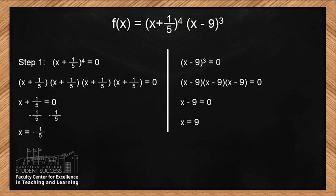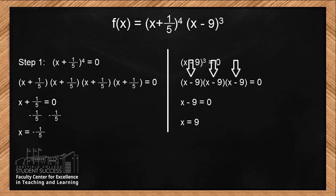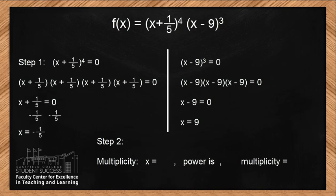Notice that x equals negative one-fifth occurred four times — because we have four of the same exact factors, and the exponent is 4. For x minus 9, that factor appeared three times, hence the power is 3. So not only did we find our zeros, we can predict the multiplicity by looking at the power of each factor. For x equals negative one-fifth, the power is 4, so the multiplicity equals 4.